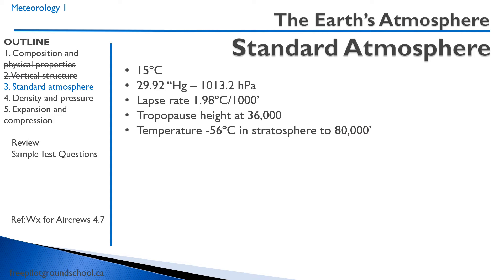Let's talk about the standard atmosphere. The standard atmosphere is basically the average atmospheric properties across the world, and these numbers will come up often in your meteorological training. The standard atmospheric temperature is 15 degrees Celsius. The standard pressure is 29.92 inches of mercury — that's the altimeter setting — or 1013.2 hectopascals. The lapse rate, that is the change of temperature with altitude, is 1.98 degrees Celsius per thousand feet. The standard tropopause height is 36,000 feet, with a temperature of minus 56 degrees Celsius, extending through the stratosphere to 80,000 feet.